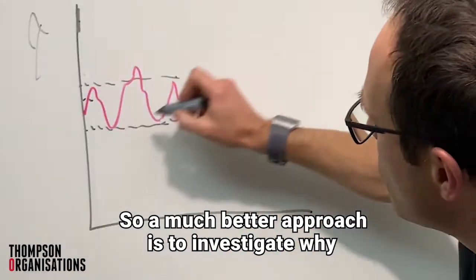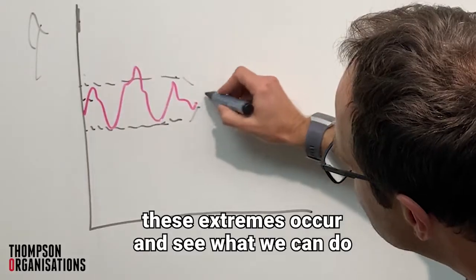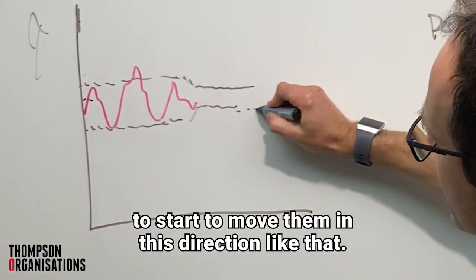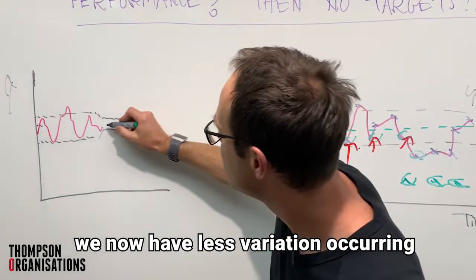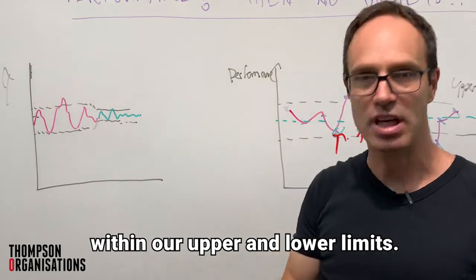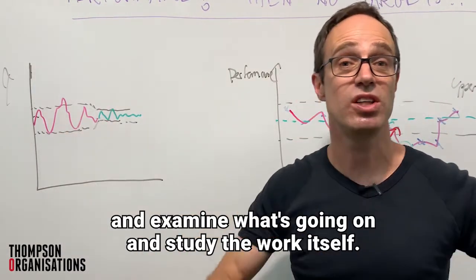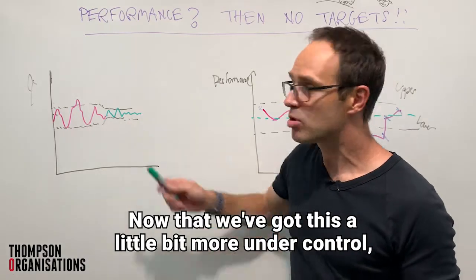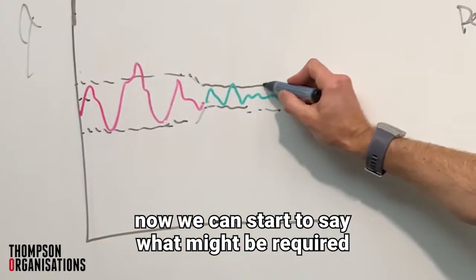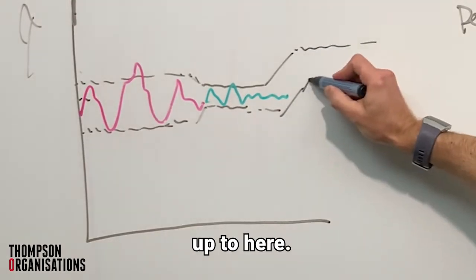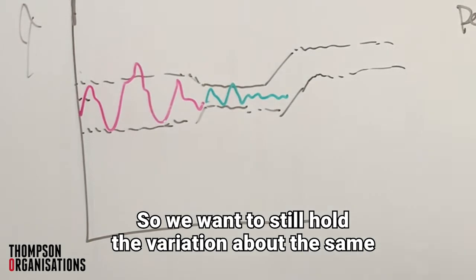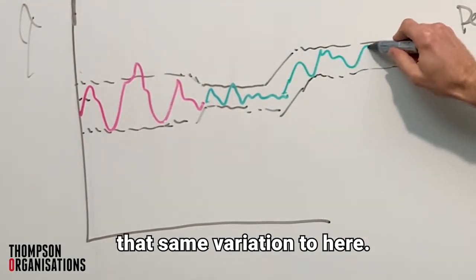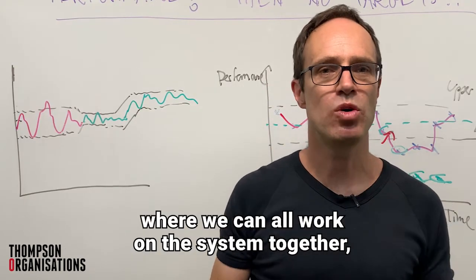A much better approach is to investigate why these extremes occur, and see what we can do to start to move them inward — so that we now have less variation occurring within our upper and lower limits. To do that, you're going to have to get together and examine what's going on and study the work itself. Now that we've got this a little bit more under control, we can start to say what might be required to cause a lift up to here — holding the variation about the same, but moving that same variation upward. That's how we create improvement where we can all work on the system together.